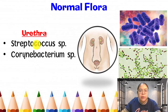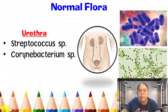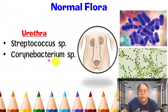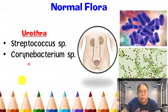We also have normal flora in the urethra. These include Streptococcus species and Corynebacterium species — both are species-level classifications found in the urethra.